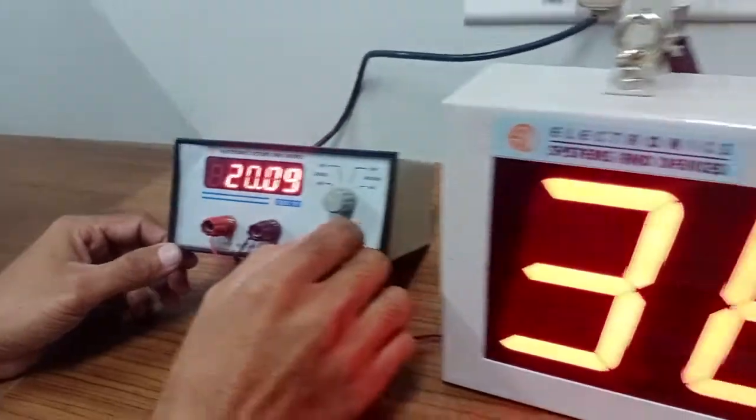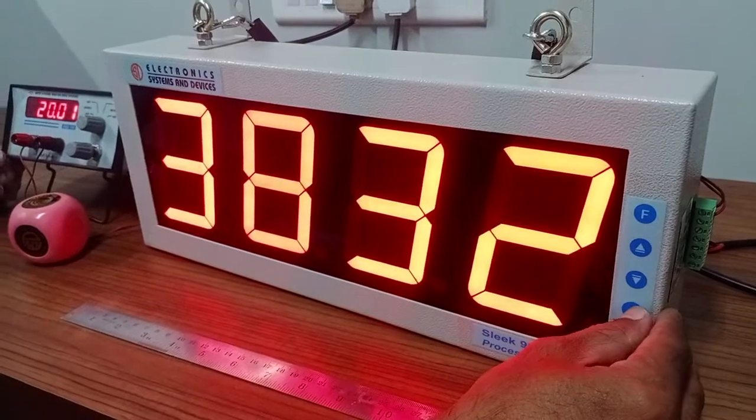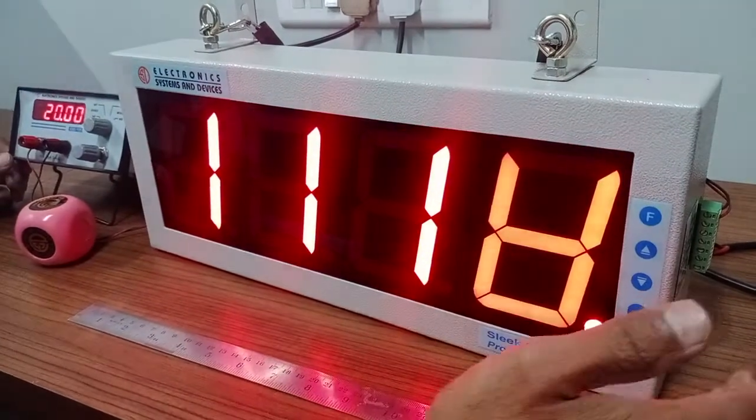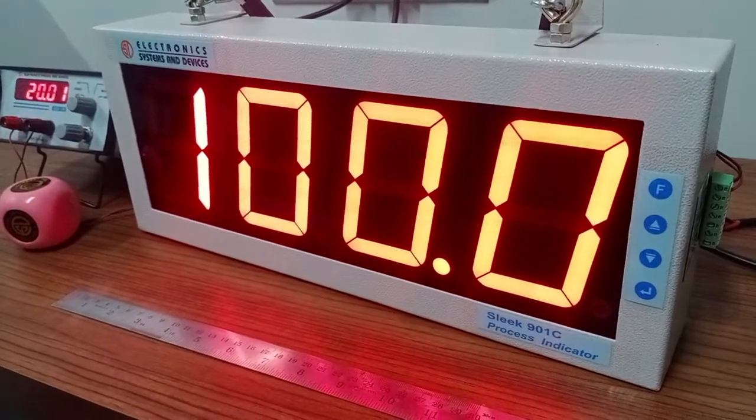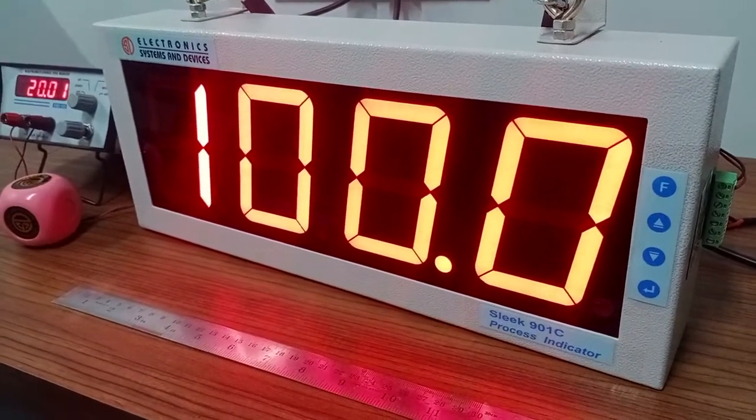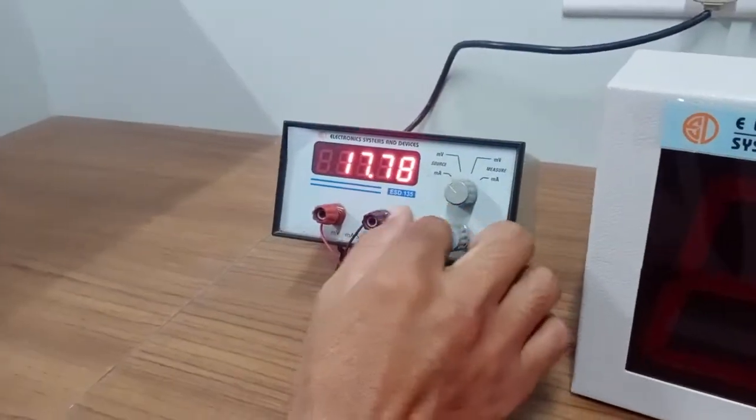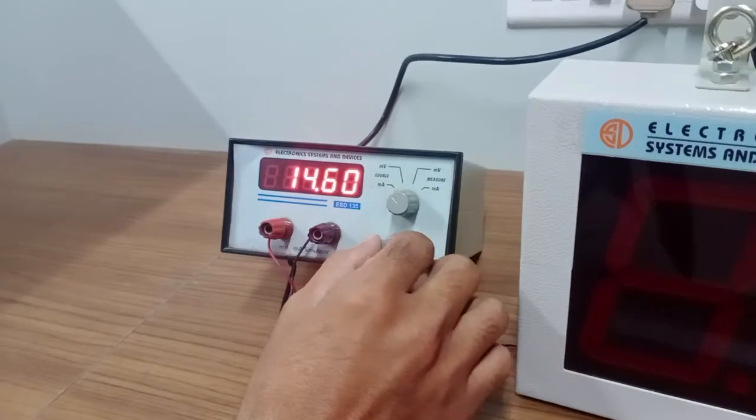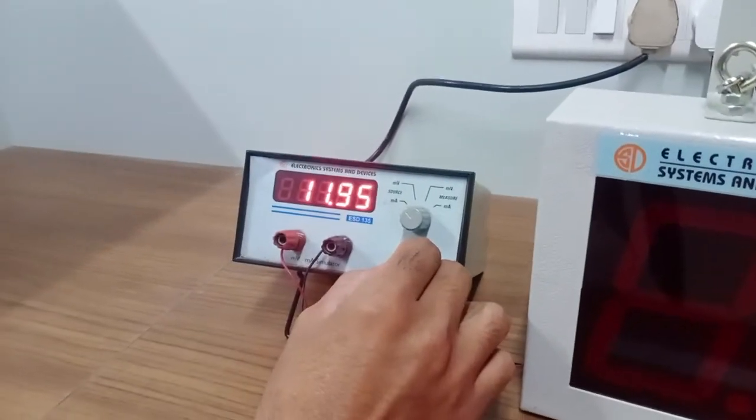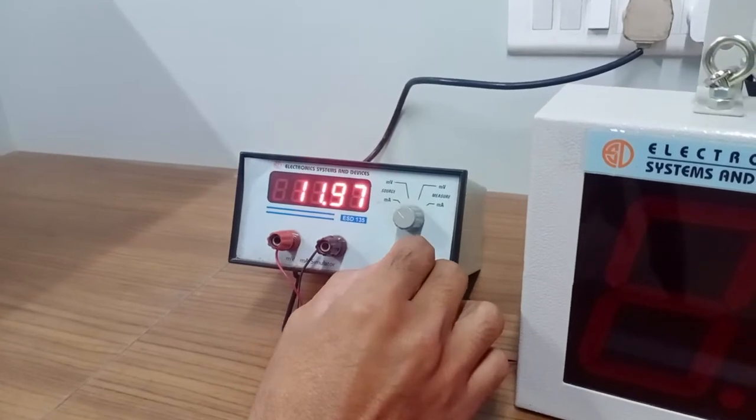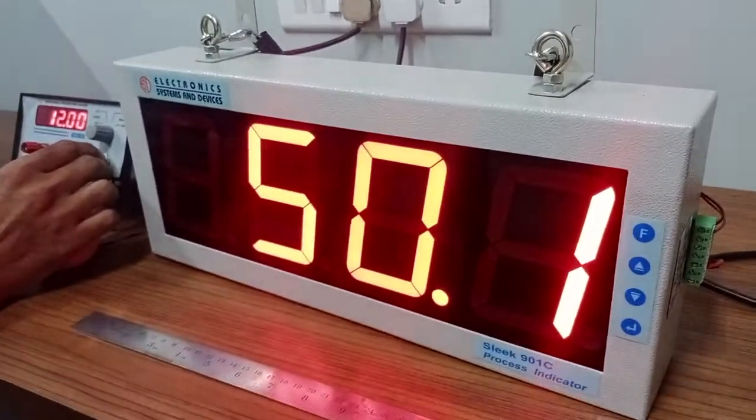And press enter. So now we are getting - you have entered upper limit as 100.0, so for the span we are getting the same. We'll just give a reading of 12 milliampere, and here we'll get a reading of 50. It is half, okay, that's fine.